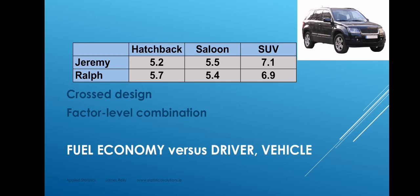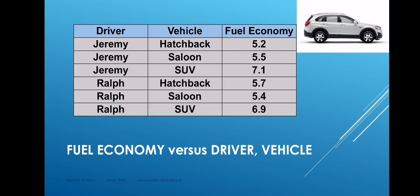The combination of a certain driver with a certain vehicle we call a factor-level combination, a phrase we will use as time goes on. In this experiment, there is only a single observation in every cell, so this experiment is actually quite limited. In future we will always have replication in the cells, but we begin with this simple example.